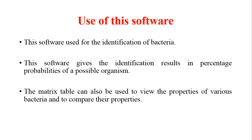The matrix table can also be used to view the properties of various bacteria and to compare their properties. This website has various tools to compare two, three, or four different bacteria — similar to how you compare mobile phones on Flipkart or Amazon. Similarly, here you can compare the properties of two bacteria, and you can also search for the microscopic and biochemical properties of a particular bacterium.